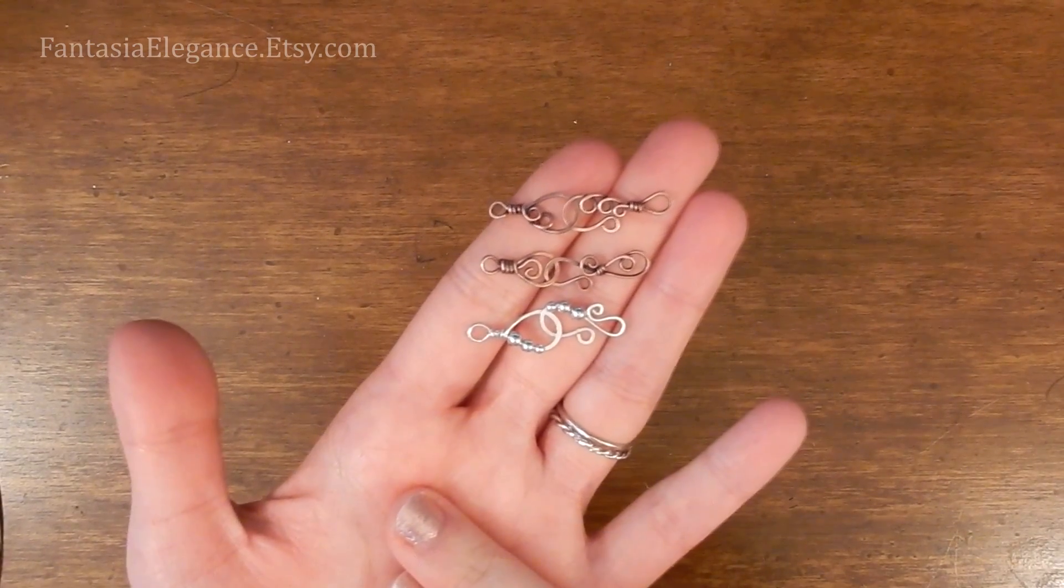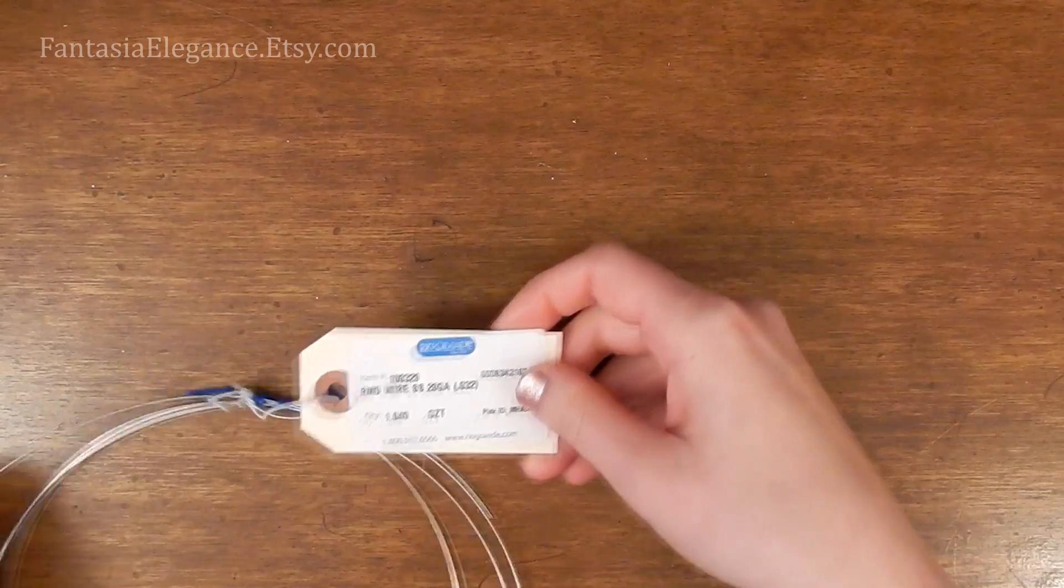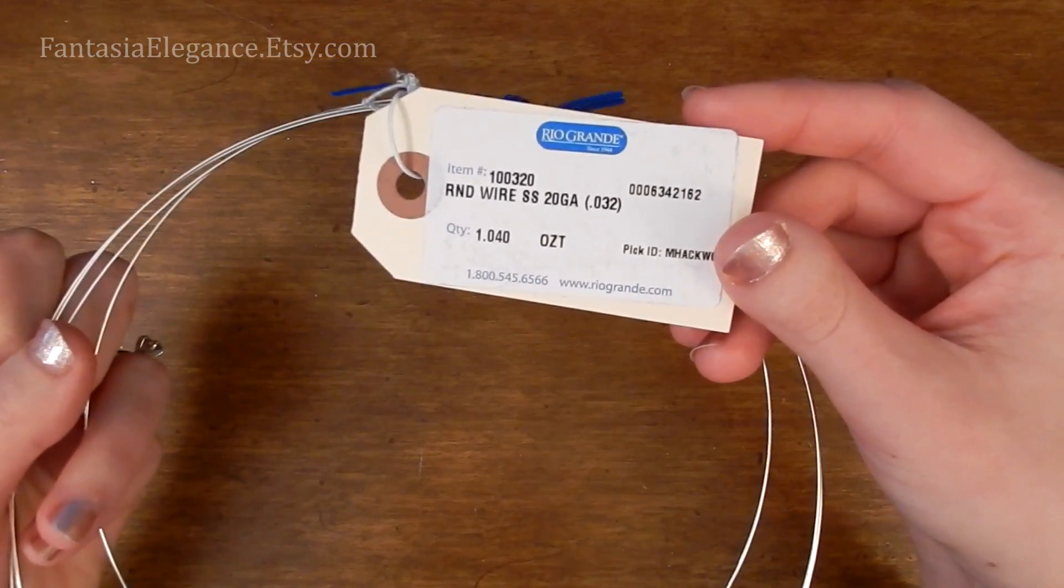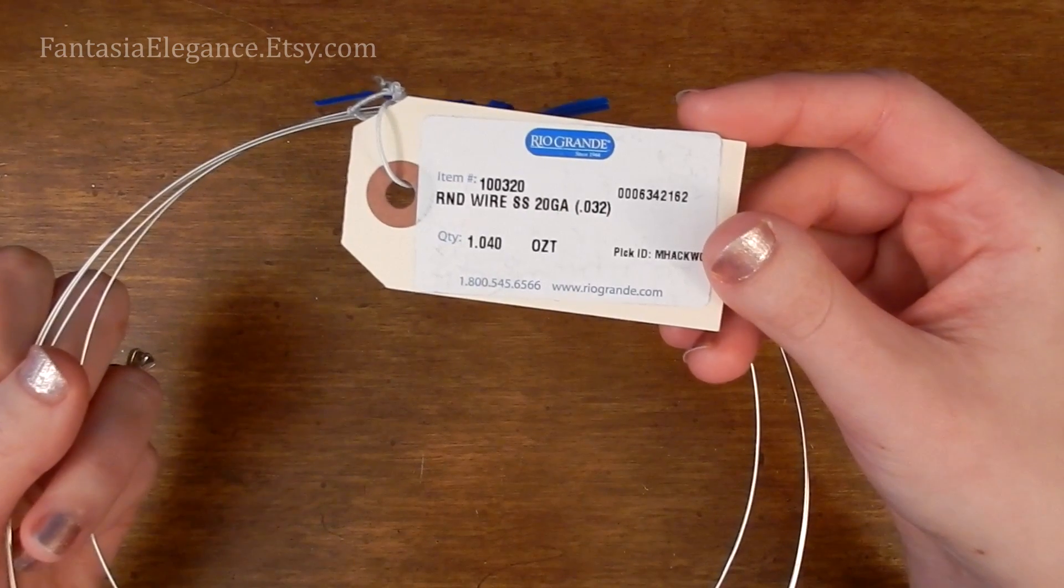So to make all of these styles we'll just be using some 20 gauge wire, and I'll be using sterling silver from Rio Grande. You can use any kind of wire you like as long as it is 20 gauge round dead soft.